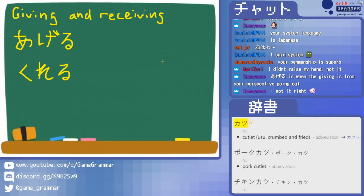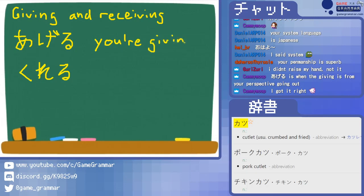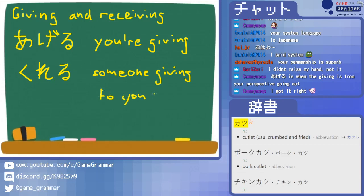What I will try to do now in the next few minutes is give an extended understanding you can apply in general. The main problem with saying 'from your perspective' is: what happens if you're not even part of the sentence? What happens if the speaker isn't really part of the action? Then you can't look at something from your perspective when you're not there. So the easy way: ageru is you giving, and kureru is someone giving to you — that's the basic understanding.